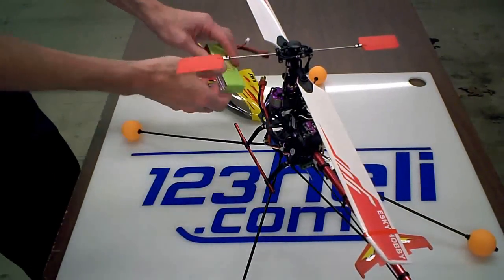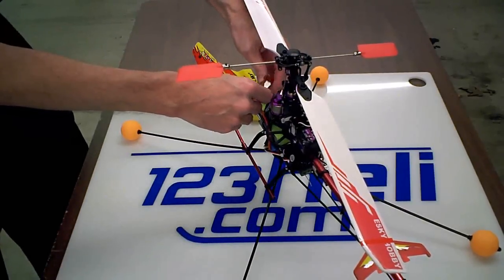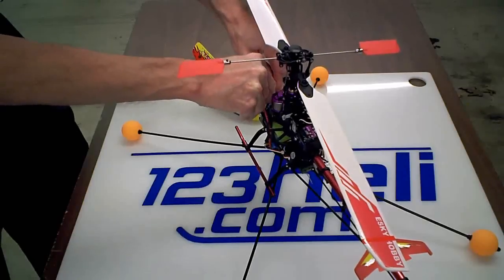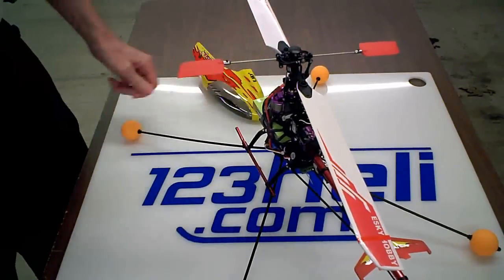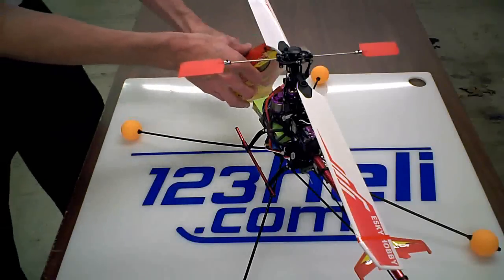Slide your battery in. Connect it up. Let it initialize. Once it's initialized, slide your canopy on.